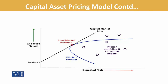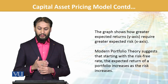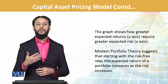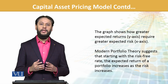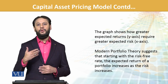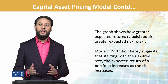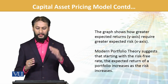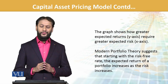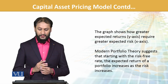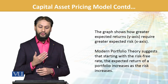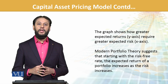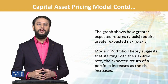We can extract and draw this from the formula, graphically, or from a table. The graph shows how greater expected return requires greater expected risk — a normal trend we've seen across different lines. The x-axis reflects risk and the y-axis reflects return: higher the risk, higher the return. Modern portfolio theory suggests that starting with the risk-free rate, the expected return of a portfolio increases as risk increases. As you keep raising the risk level, your expected return keeps rising, and CAPM allows you to calculate this at any point in time.